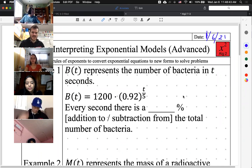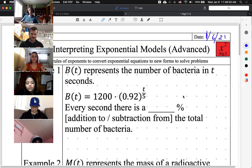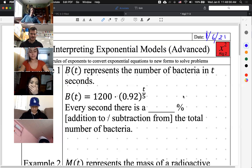The best way to see the different tricks is through examples. So, example number one, we have this capital B(t) is representing a number of bacteria every t seconds. And we have an equation, there it is.